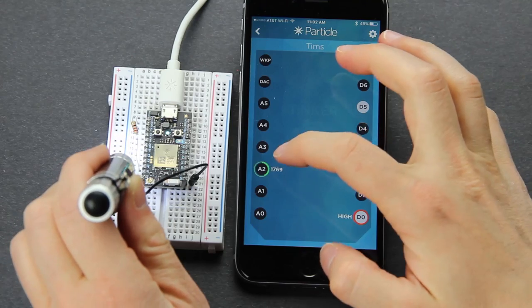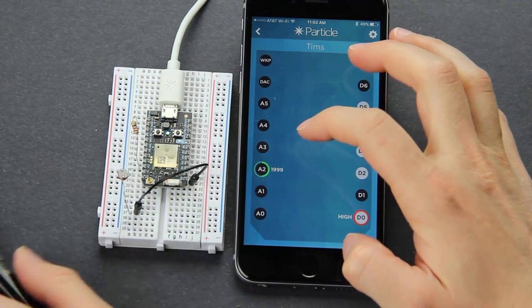Now we see as the light intensity goes up, the voltage goes up. As the light intensity goes down, the voltage reading goes down.